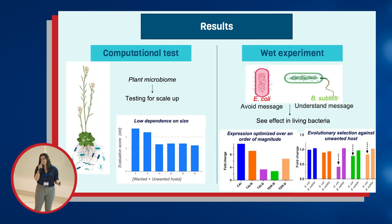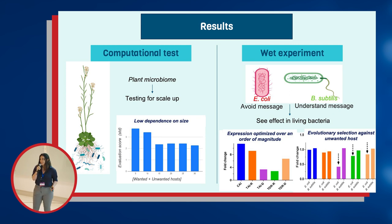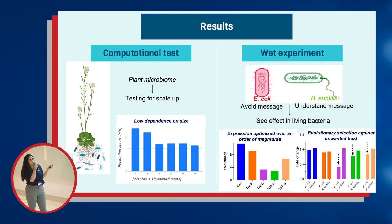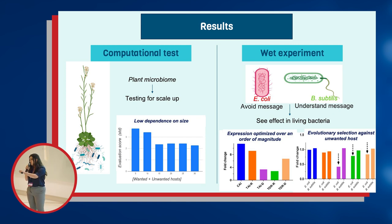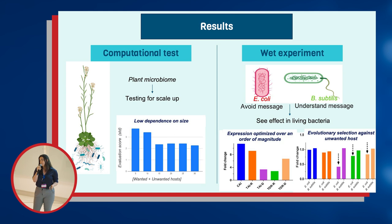I won't go into the biophysical models we used — it was a lot of complicated work — but I want to focus on the results. Being a computational person, we started with a computational analysis. We took the Arabidopsis Thaliana microbiome and tried to see how much we could optimize genetic expression across different community sizes. We saw that the de-optimization with size plateaus pretty quickly, meaning that even for relatively complicated communities, we may still be able to engineer them in a way that is sustainable over time.